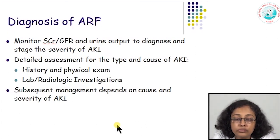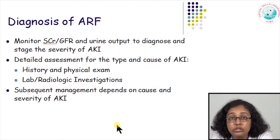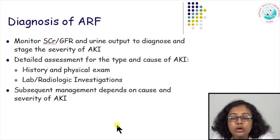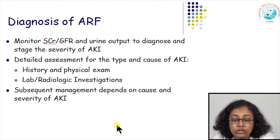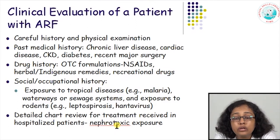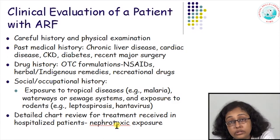When we talk of diagnosis of acute renal failure, that is relatively simple. You do a serum creatinine, calculate an estimated GFR, and monitor urine output to stage the severity of acute kidney injury based on the KDIGO classification — whether it is Stage 1, 2, or 3. Then you do a detailed assessment for the cause of AKI. Subsequent management will depend on the cause and the severity of the disease. When evaluating a patient for acute renal failure, once we know based on serum creatinine, estimated GFR, and urine output that the patient has AKI, we ask: why did the acute renal failure develop?